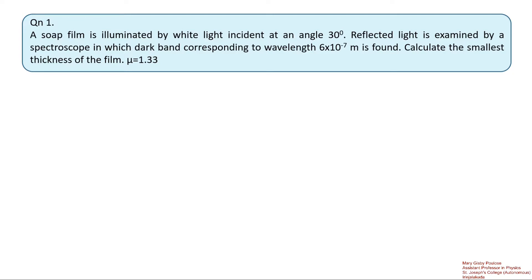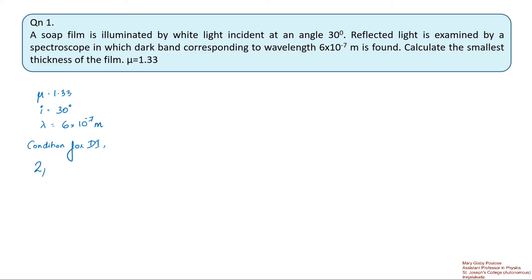The refractive index of the soap film is 1.33. Let us write down the given parameters: mu = 1.33, angle of incidence = 30 degrees, and wavelength lambda = 6×10⁻⁷ meters. Here we see a dark band, so the condition for destructive interference can be used: 2μt cos r = nλ.